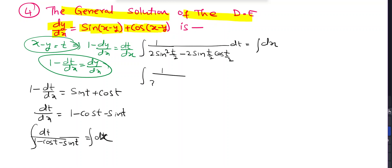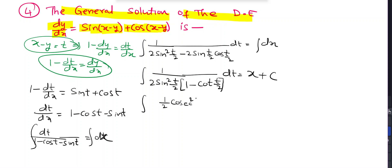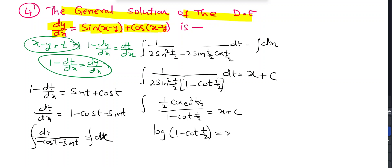Simplifying the integrand using half-angle formulas, this reduces to (1/2)∫cosec²(t/2)/(1 - cos(t/2)) dt, which is in the form f'(x)/f(x), giving log(1 - cos(t/2)). Further simplification yields log|tan(t/2)| = x + C.